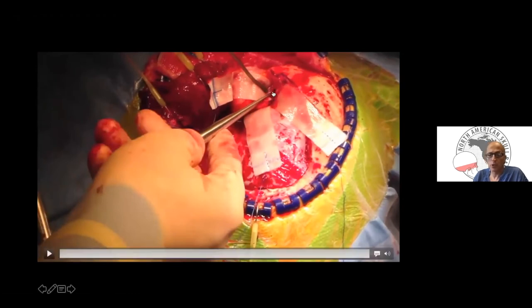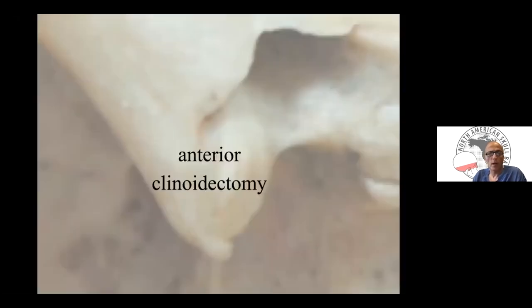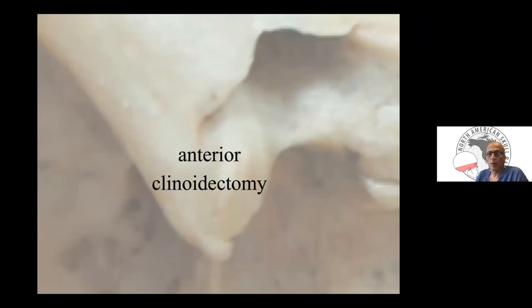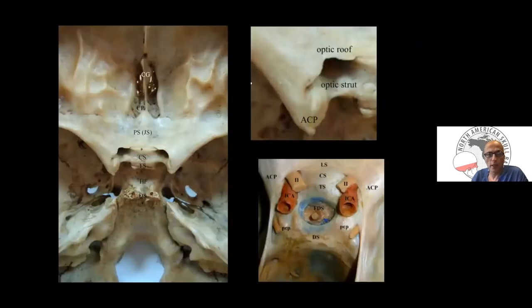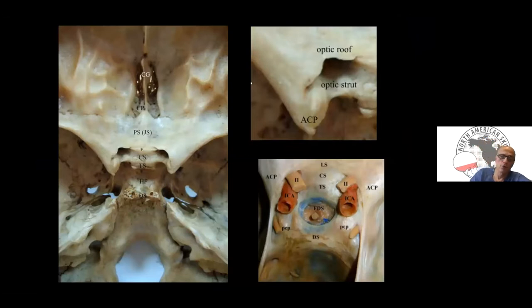The frontal sinus is open in this case, which we address. When you do the OZ and want to expose the cavernous sinus, you need to perform anterior clinoidectomy. My preference is extradural anterior clinoidectomy. You must have a full understanding of the bony, vascular, and nervous anatomy in this region.